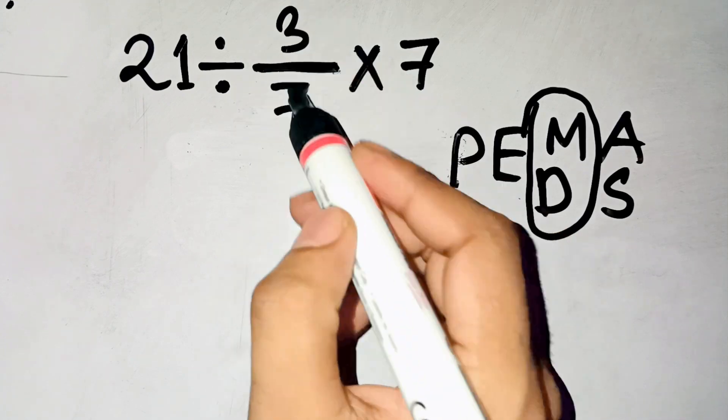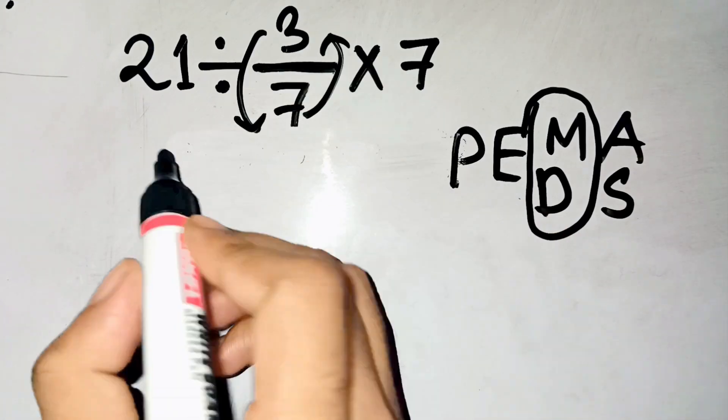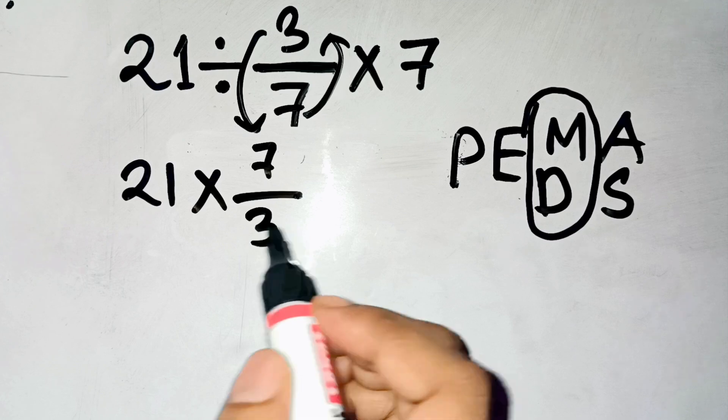Now, dividing by a fraction means multiplying by its reciprocal. So that becomes 21 times 7 over 3. Let's do that step.